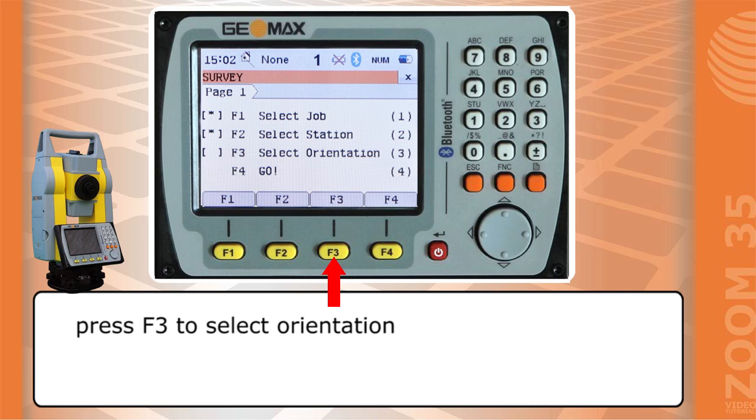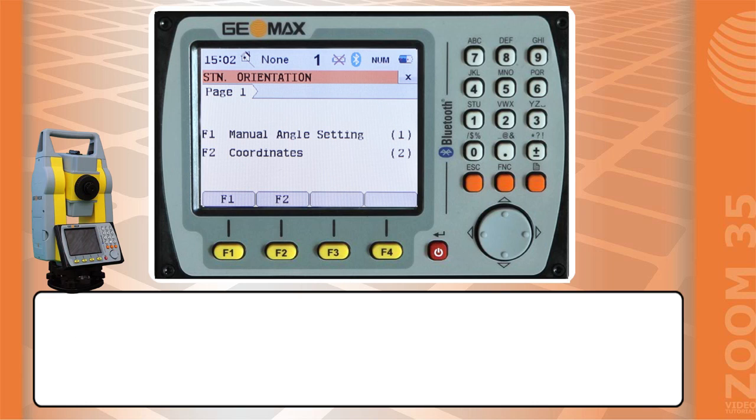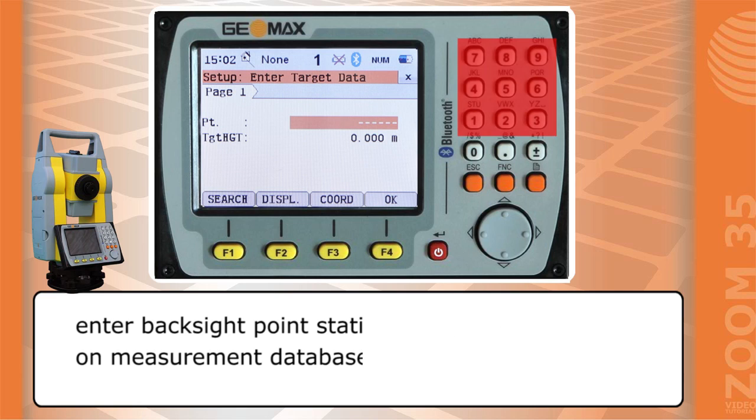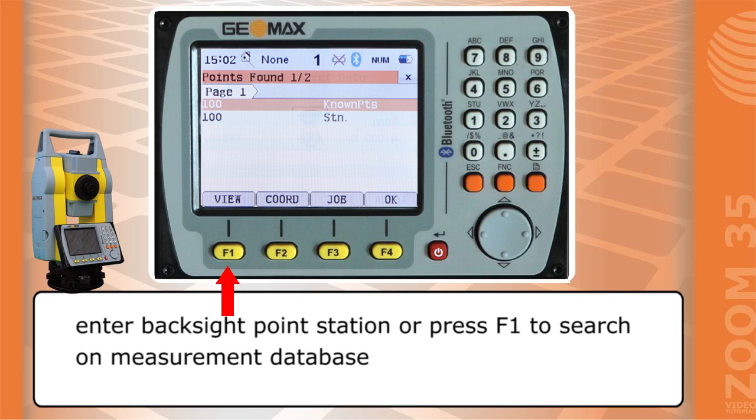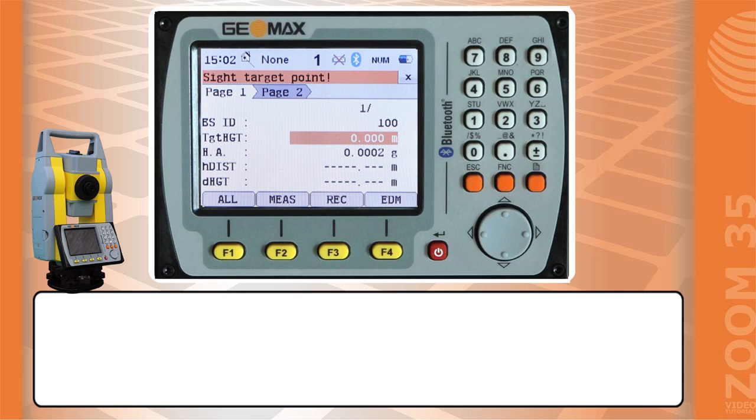Press F3 to select orientation. Press F2 to choose a point for orientation. Enter backside point station. Press F1 to search on measurement database. Measure point by F1.